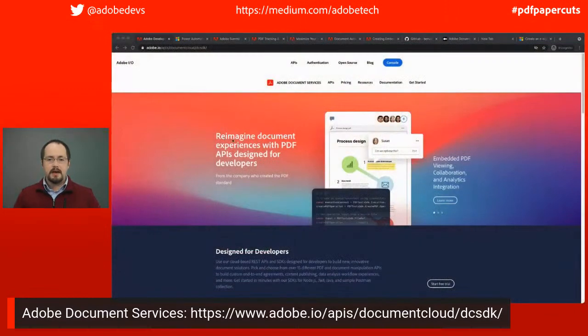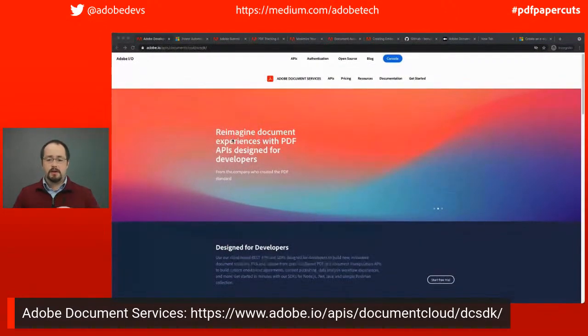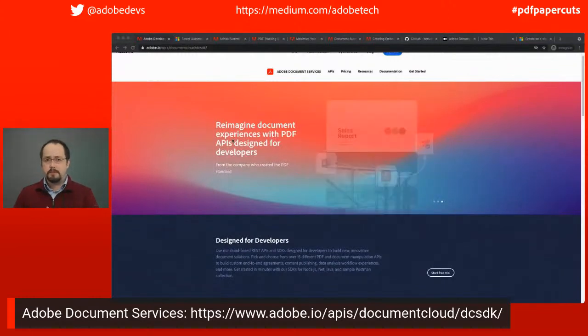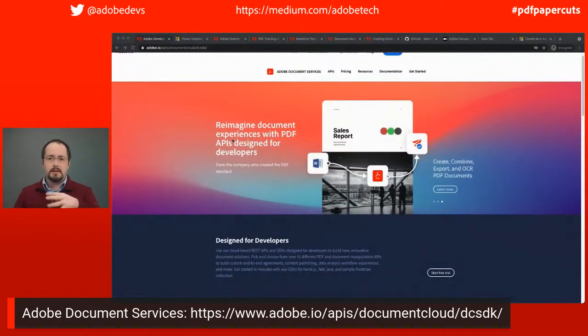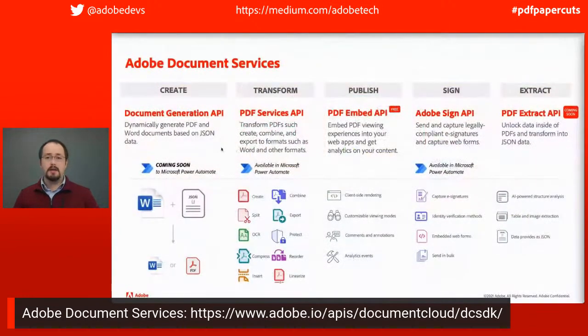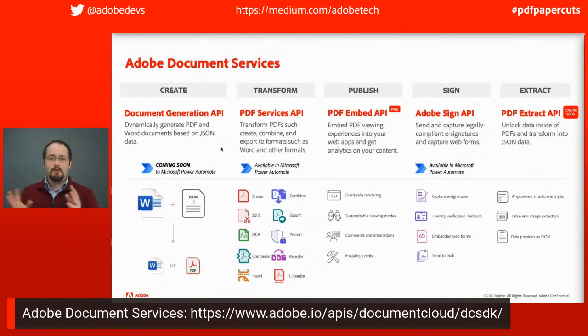If you're not familiar with Adobe Document Services, it is a set of services and APIs that allow you to do a variety of things around being able to generate documents, merge PDFs together, combine them, and a variety of different services you can utilize. If you want to learn more, go on over to Adobe.io — we have a huge amount of details there to help you learn and get started.